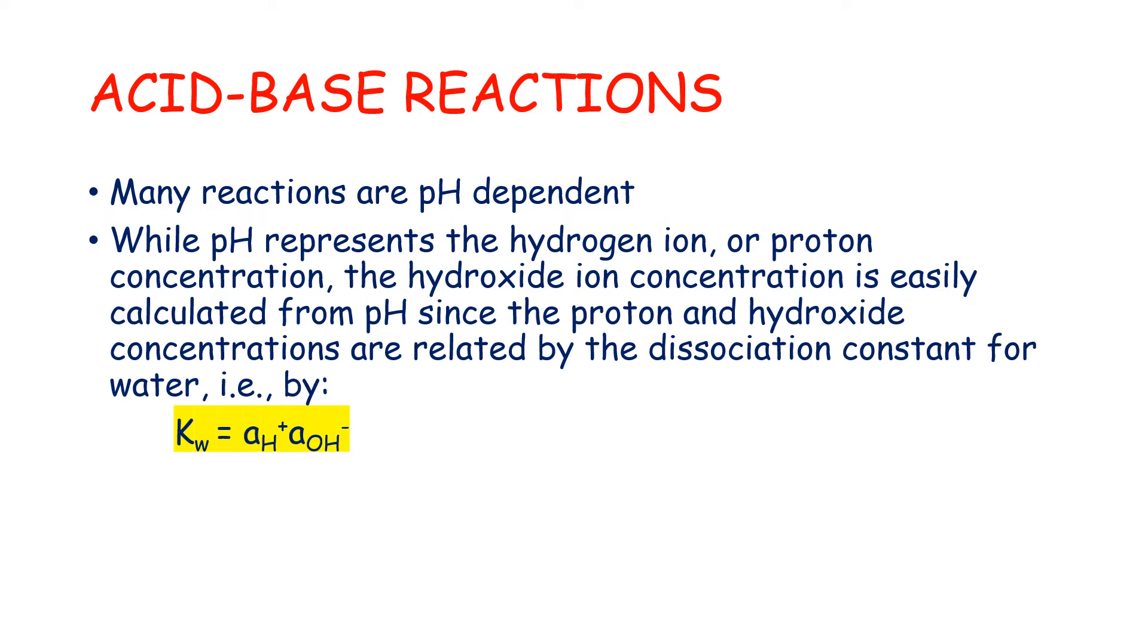Acid-base reactions involve many kinds of reactions and many reactions are pH dependent. While pH represents the hydrogen ion or proton concentration, the hydroxide ion concentration is easily calculated from pH since the proton and hydroxide concentrations are related by the dissociation constant for water.